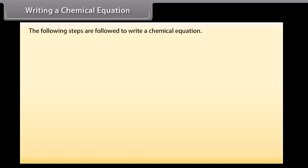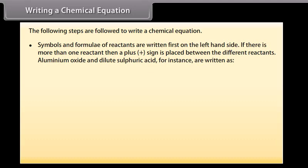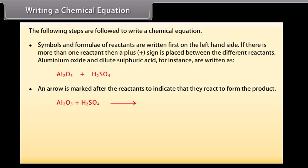To write a chemical equation, the following steps are followed: symbols and formulae of reactants are written first on the left-hand side. If there is more than one reactant, a plus sign is placed between them. For instance, aluminum oxide and dilute sulfuric acid are written as Al2O3 plus H2SO4. An arrow is marked after the reactants to indicate that they react to form the product.